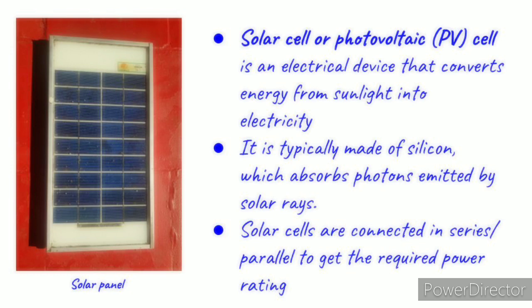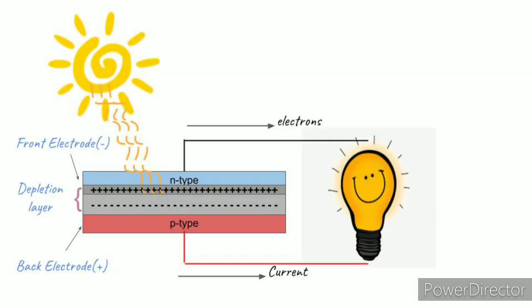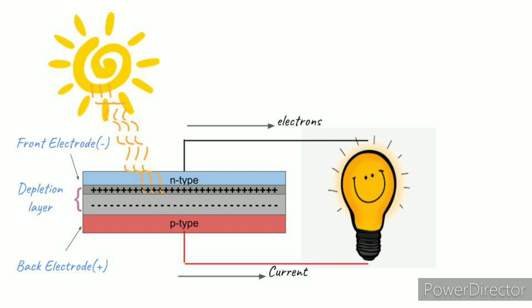Solar cells are connected in series or parallel to get the required power rating. Electrically, a solar cell is similar to the normal P-N junction diode. But in terms of construction, a solar cell consists of a thin heavily doped N-type layer which forms the front electrode and a thick lightly doped P-type layer which forms the back electrode. Thus, a depletion layer is formed similar to a P-N junction diode.